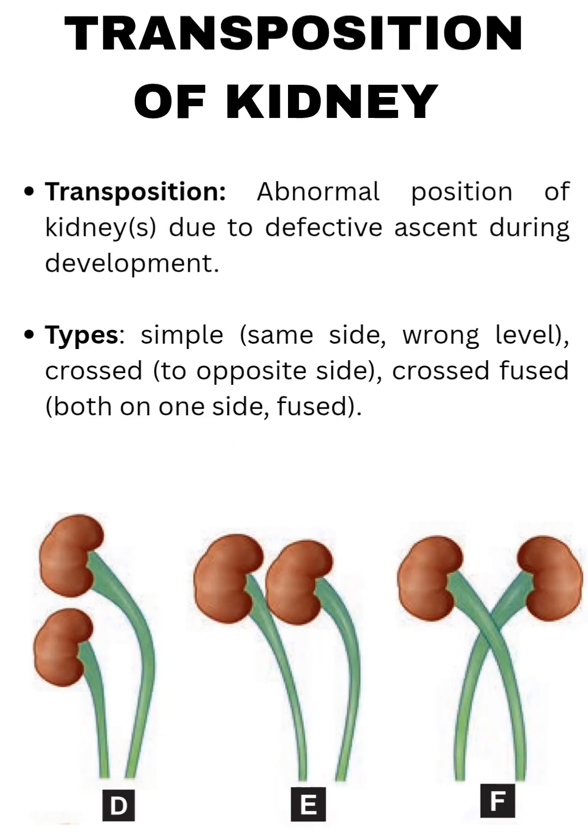Transposition of the kidney: abnormal position of kidneys due to defective ascent during development. Types include: simple — same side, wrong level; crossed — to the opposite side; crossed-fused — both kidneys on one side, fused.